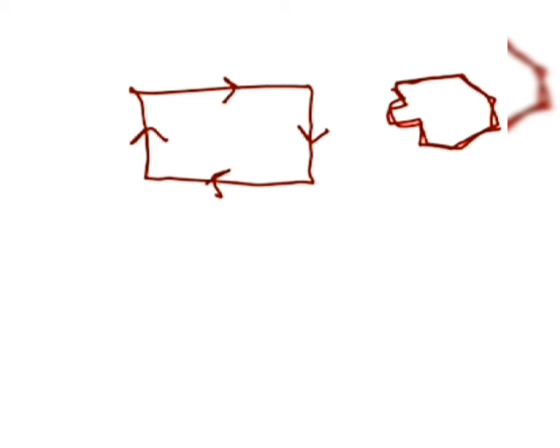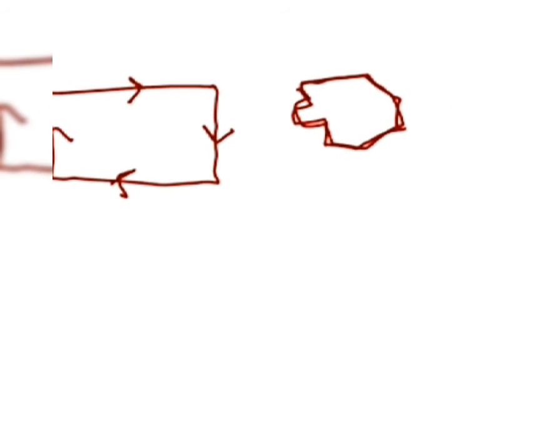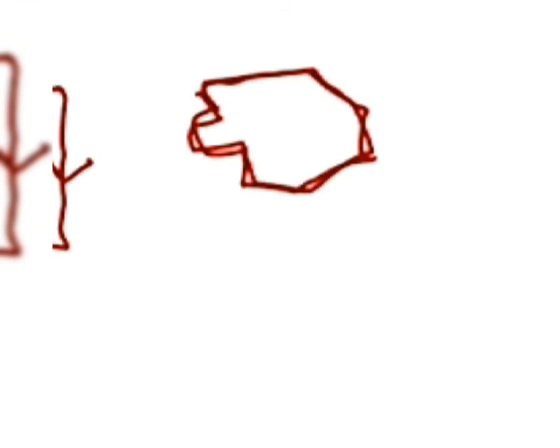You can see in this path he changes direction four times. Similarly, if he has to move in a path like this, you can see - how many times does he change direction? One, two, three, four, five, six, seven, eight, nine - almost nine times. This means nine times the velocity changes direction.